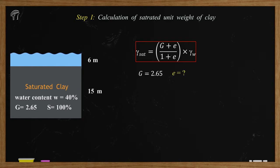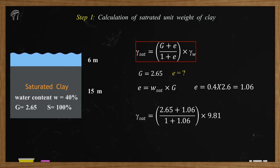We have been given relevant data to calculate E. E can be calculated as water content multiplied by specific gravity G. The water content is 0.4 and specific gravity is 2.65, so E equals 1.06. Since E is a void ratio, it does not have any unit. Now we have all the data required to calculate saturated unit weight, so γ_sat equals 17.67 kN/m³.